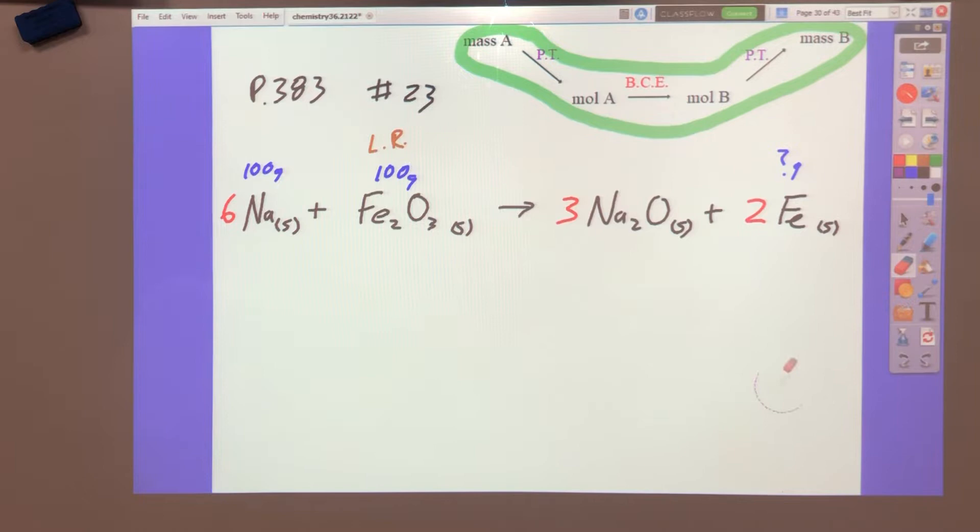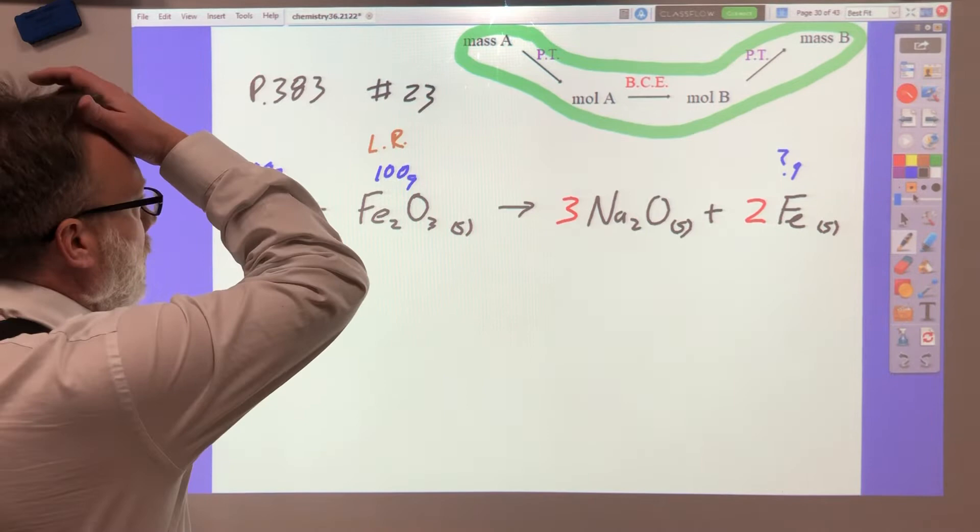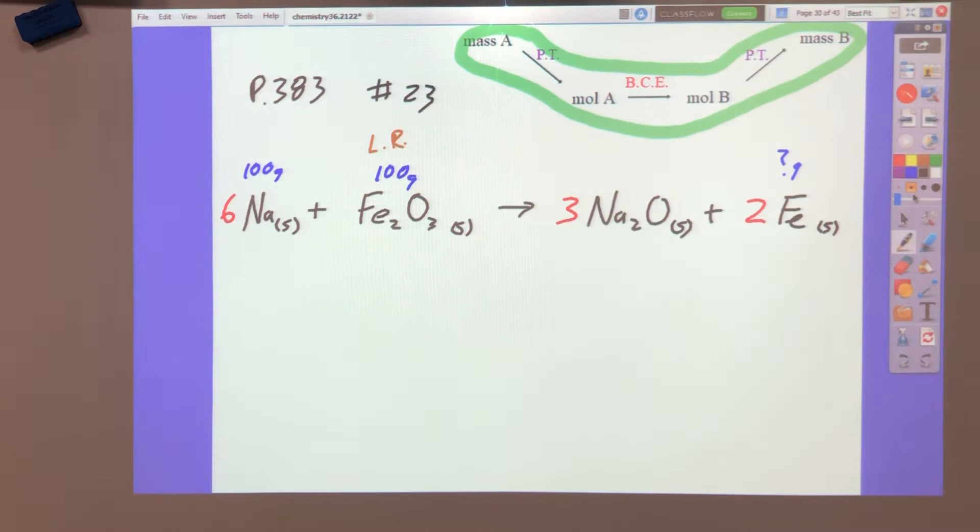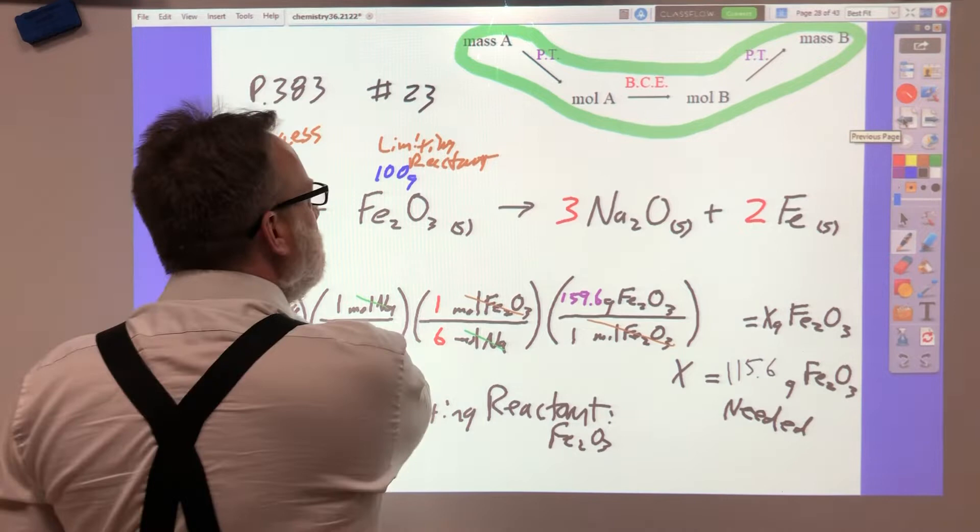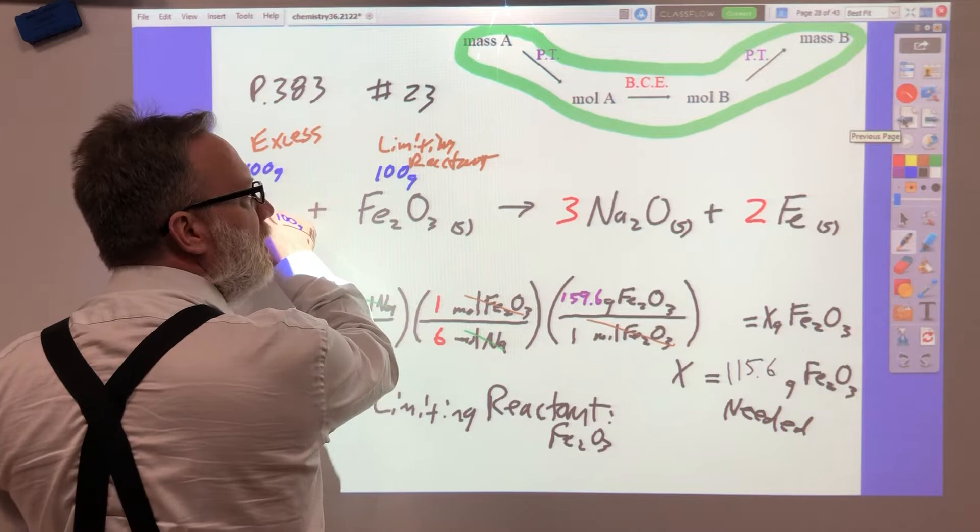Now, what I would start with, there are different ways you could do this. We could use the amount of this we needed from back here. Actually, we could use our limiting to figure out what of this we used and then did it.